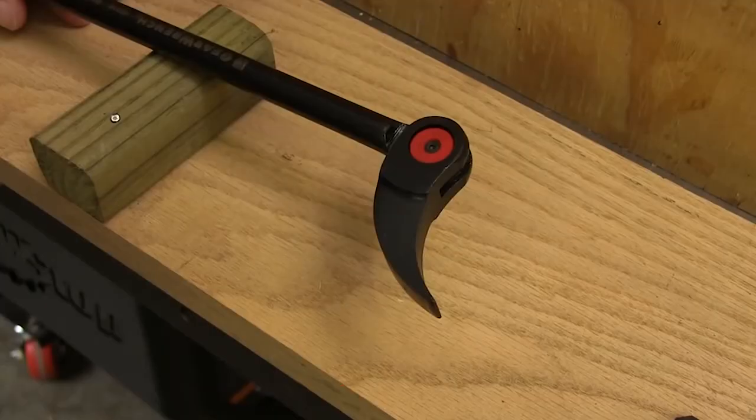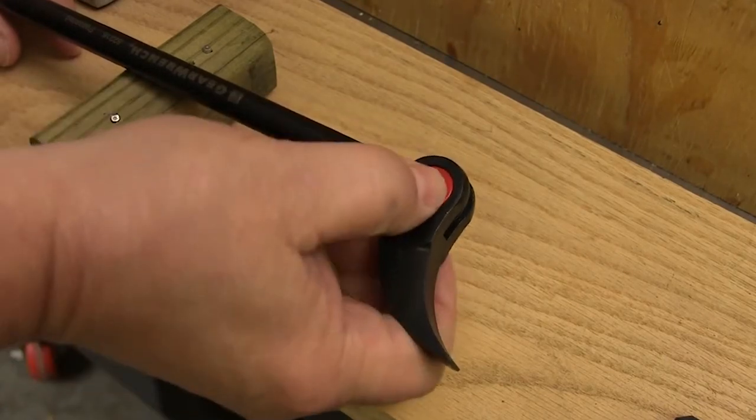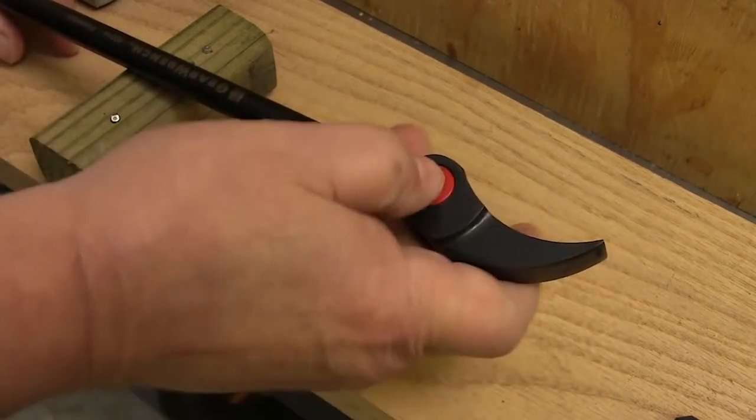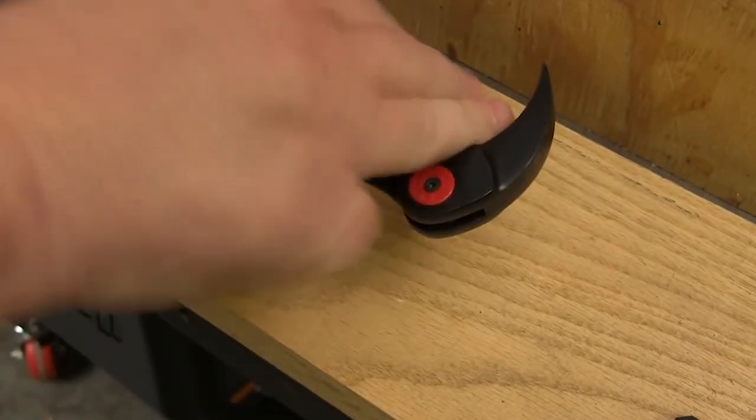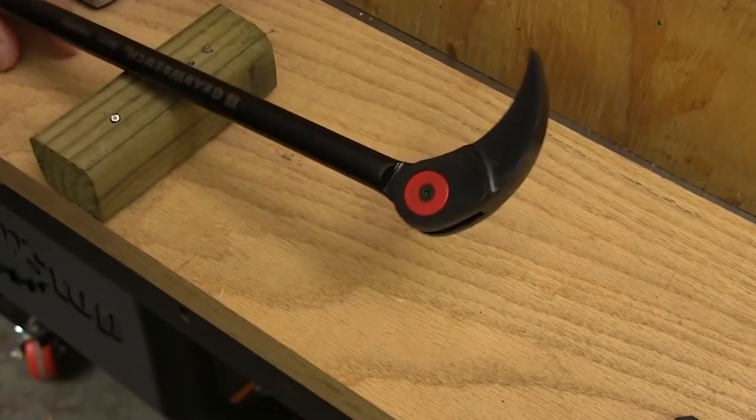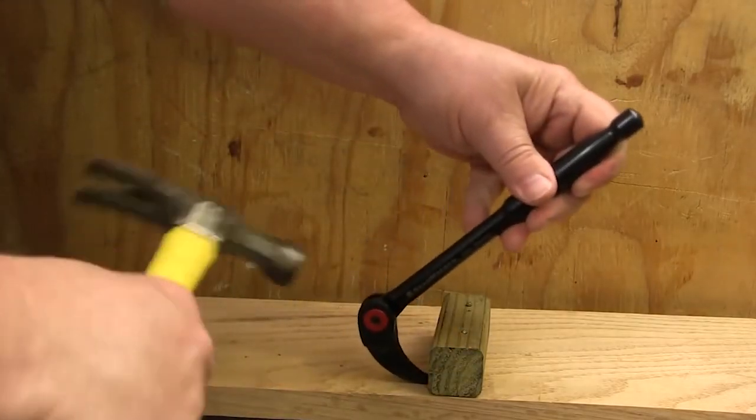And you don't even need any tools to change the index on the head. Push the red button and you can turn the head to any of 14 positions within a 180-degree arc. And when you release the button, the head locks solidly. Even when there are no obstructions, you can set the head wherever it's most comfortable for you.